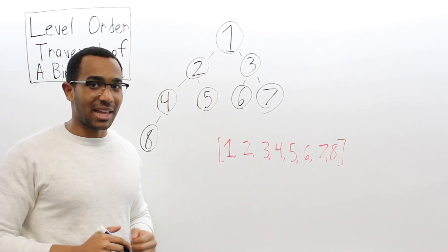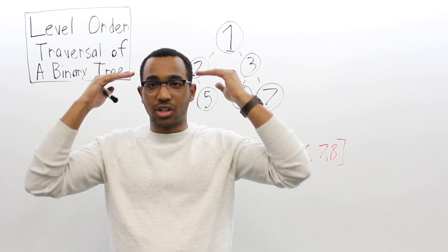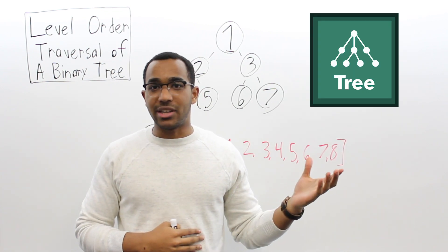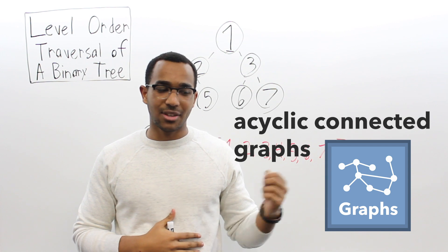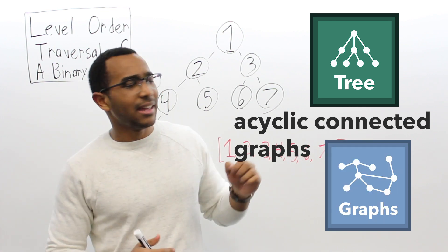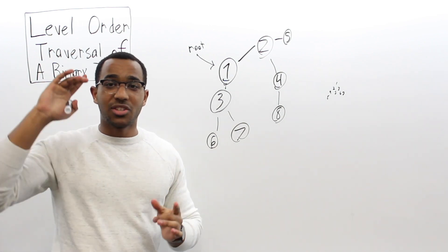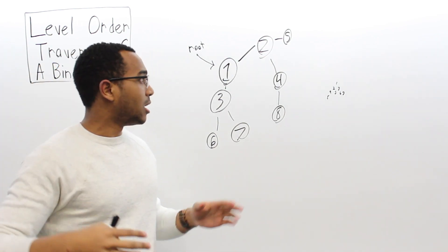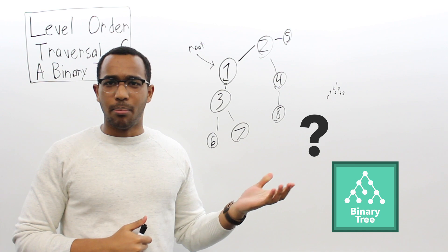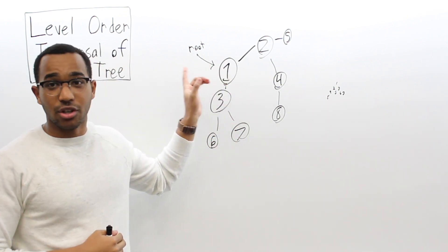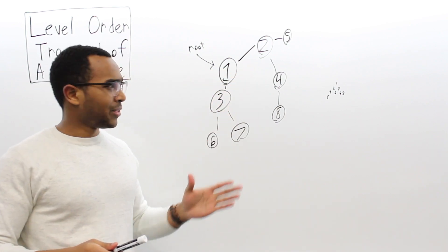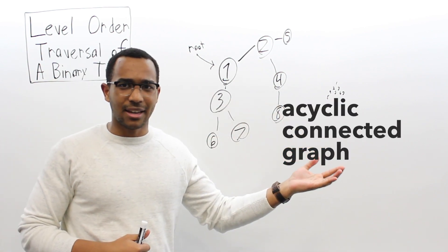How do we traverse the tree level by level? This is where our knowledge of data structures comes in. We realize that all trees are acyclic connected graphs, and an acyclic connected graph is a tree. So if we have an acyclic connected graph, it might not look like a tree — it might look like this. Do you see a graph or do you see a tree? You actually see both: an acyclic graph with no cycles, and also a tree, because a tree is an acyclic connected graph.